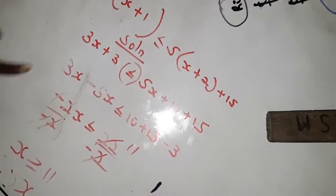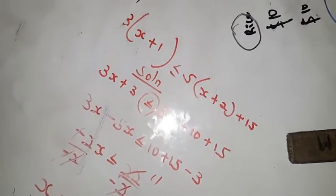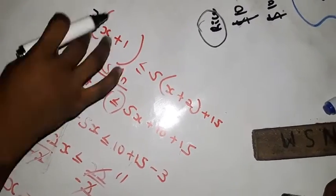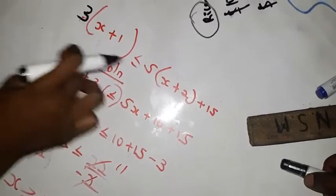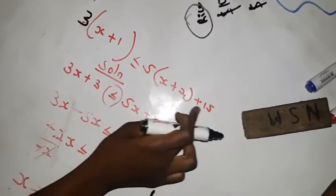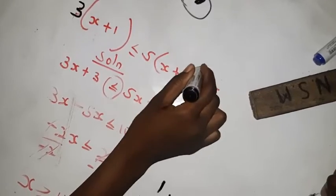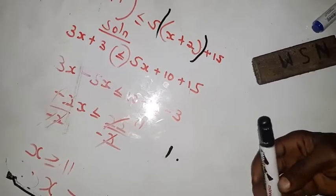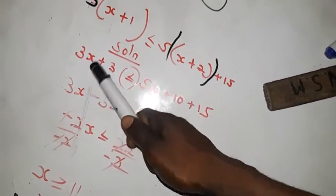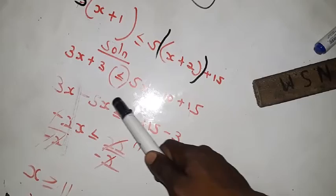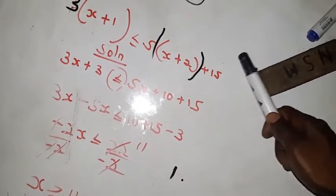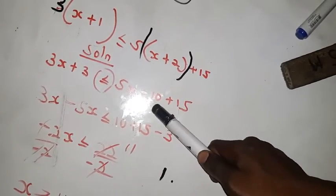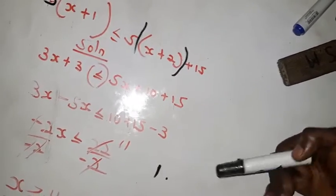Esther explains: I used the 3 to multiply everything in the bracket, and I used the 5 to multiply this - it's affecting only this. After multiplying, 3 times s gives us 3s, and 3 times 1 gives us 3. You maintain the less than or equal to sign, then 5 times s gives us 5s, and 5 times 2 gives us 10, plus 15.